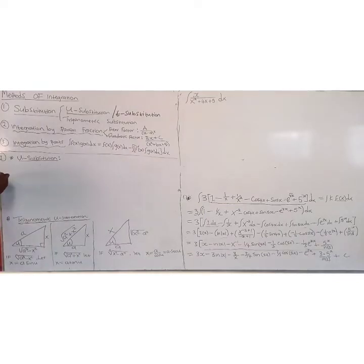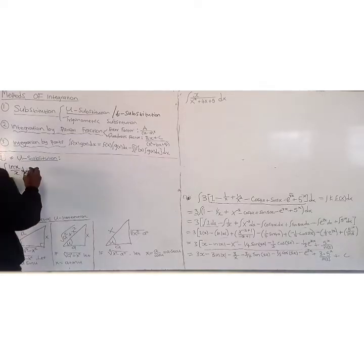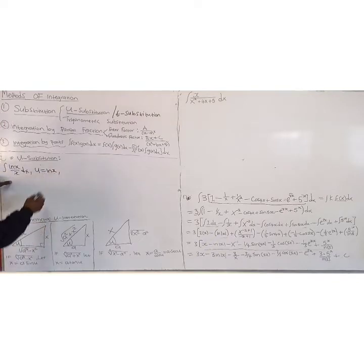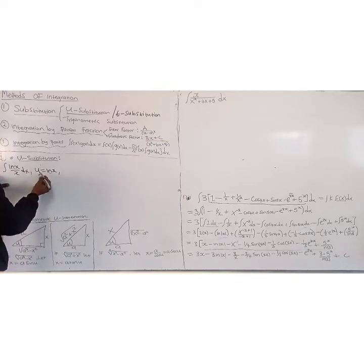For example, let's integrate ln(x) divided by x dx. We use u-substitution here, whereby we let u equal ln(x). Since we've changed u to be ln(x), we also have to change dx — that means differentiating u with respect to x.